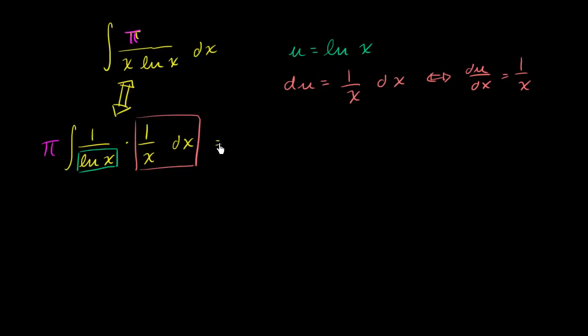Let's rewrite this integral. It's going to be equal to π times the indefinite integral of 1 over u, natural log of x is u, times du. Now this becomes pretty straightforward.